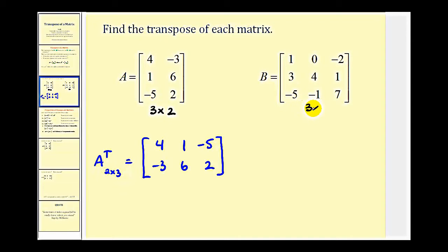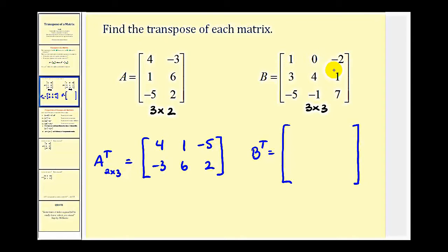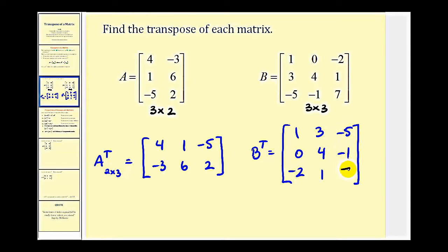Matrix B is a three by three matrix, so the transpose of matrix B will also be a three by three matrix. We're going to take the elements in the rows and make them the columns of the transposed matrix. Row one has elements one, zero, negative two, which means column one in the transposed matrix will have elements one, zero, negative two. Row two has elements three, four, negative one — this will form column two. Row three forms column three: negative five, negative one, and positive seven.